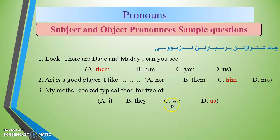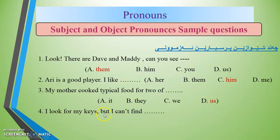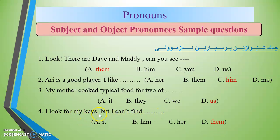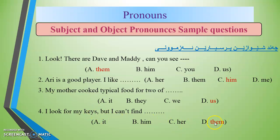For example: 'I look for my keys but I can't find them.' Here we change the noun 'keys' to the object pronoun 'them.' You do not use the subject pronoun in this position — it must be the object pronoun.